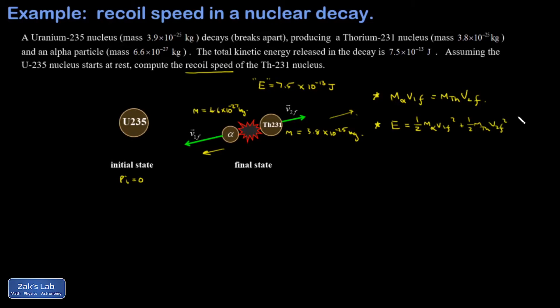This is just a system of two equations and two unknowns. What we're trying to solve for in this problem is V2 final, the speed of the thorium nucleus. So I'm going to take the first equation and solve for V1 final, then sub that into the energy equation and replace my V1 final.